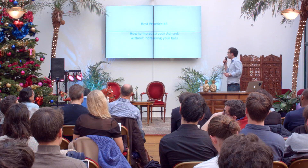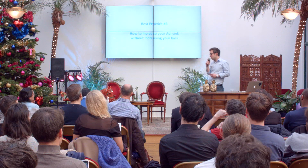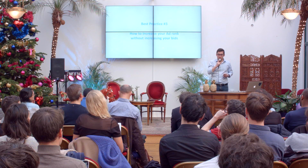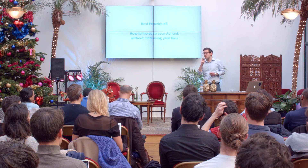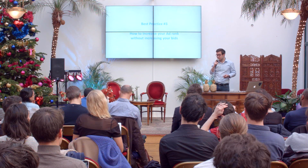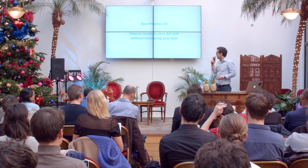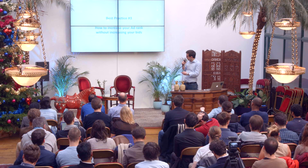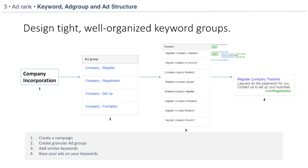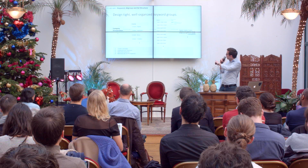When we audit accounts and onboard new customers, we often focus on quality scores. Sometimes clients are already at the top position of the search engines but want to decrease their costs, or they want to appear above a competitor with very deep pockets but aren't ready to pay more. In that case, what we do is create a very tight structure around the campaign. As you can see in this example, we have a campaign for company incorporation with all ad groups corresponding to that theme: company, register, registration, setup.